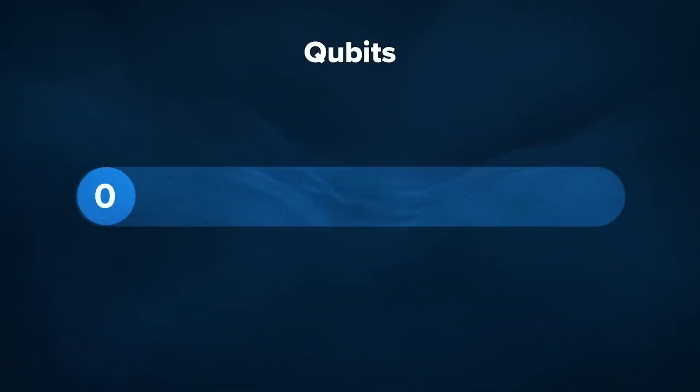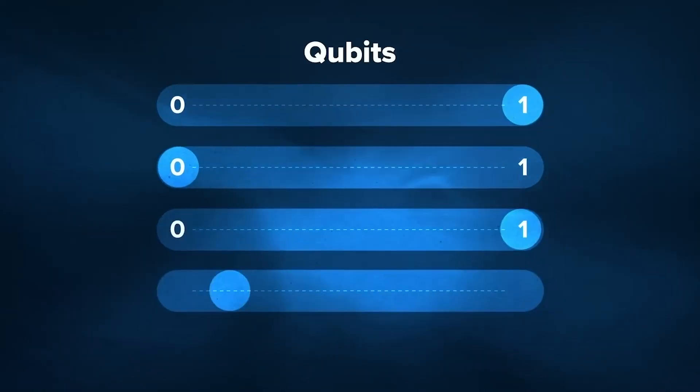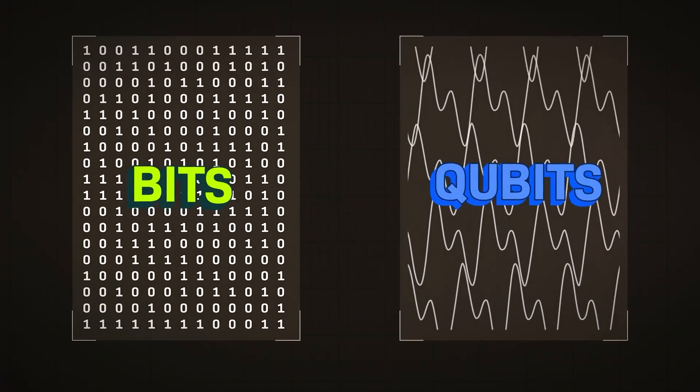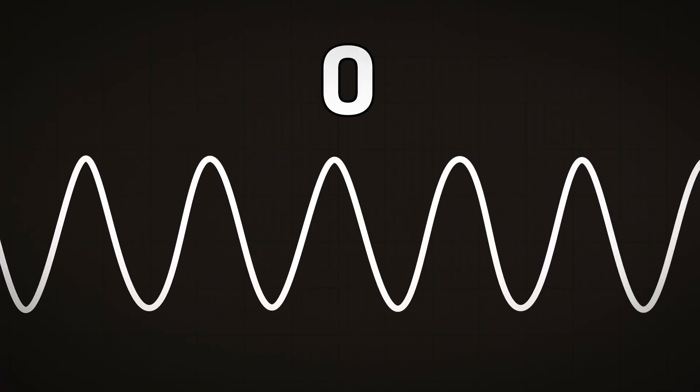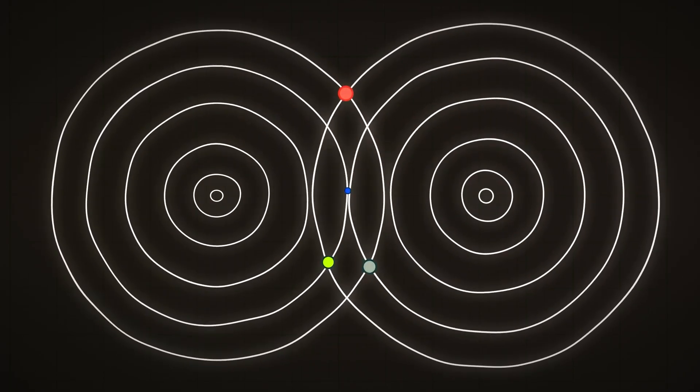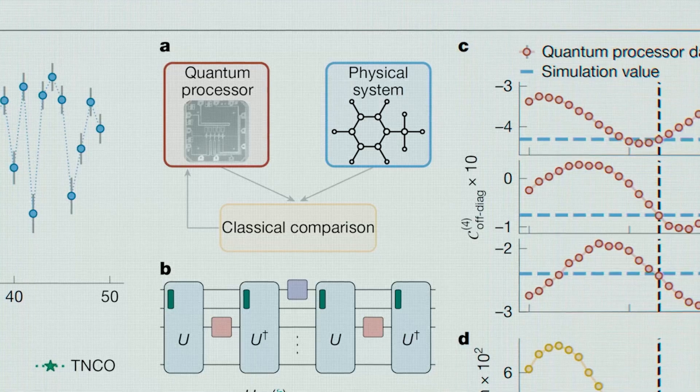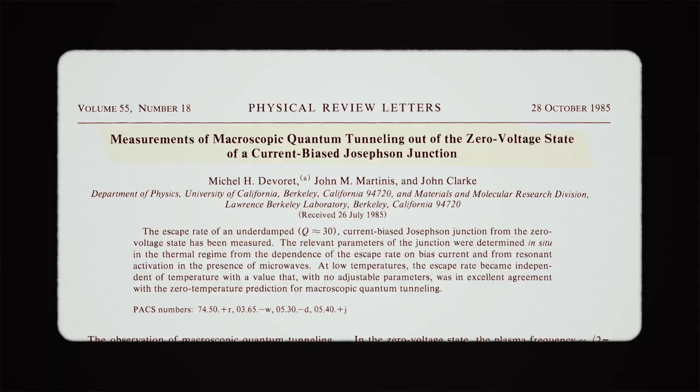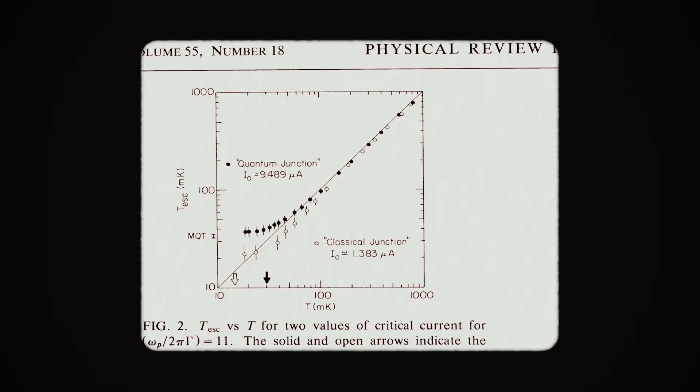Quantum computers operate differently. They use qubits, which can exist in multiple states at the same time, rather than being locked into a simple zero or one. This property allows certain types of problems to be explored in parallel rather than sequentially. Instead of evaluating one possible solution after another, a quantum system can examine many possibilities simultaneously.